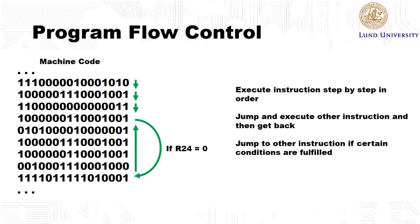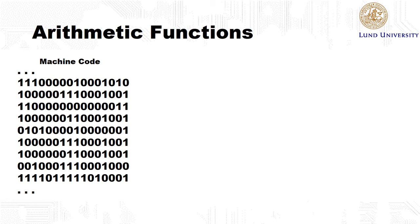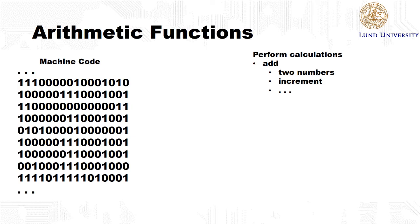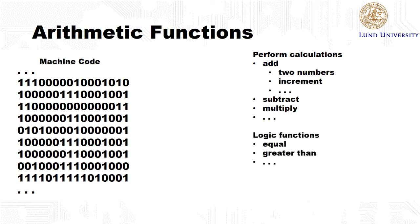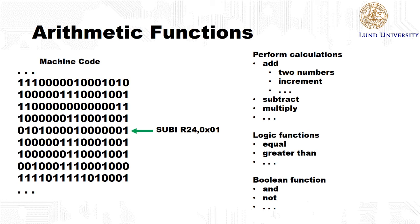Conditional jumps are like an if statement in C. The second type of instruction processors typically support is arithmetic functions — for example, adding two numbers or incrementing by one. This also includes subtract, multiply, and other calculations, as well as logic functions like testing if two numbers are equal, if one is greater than another, or boolean functions like AND, OR, and NOT. As an example, the assembler instruction 'subi' stands for subtract immediate, meaning the value at register r24 is subtracted by the number one.